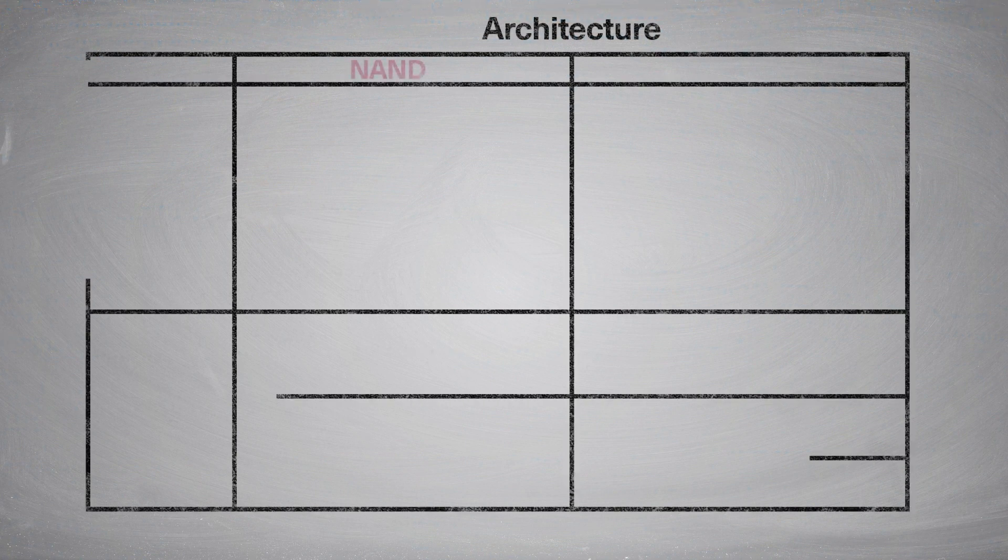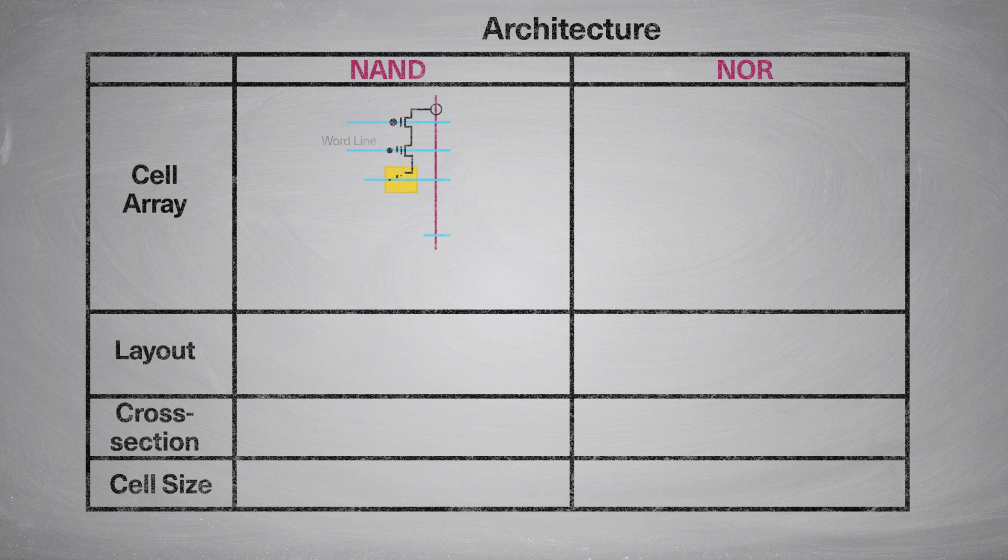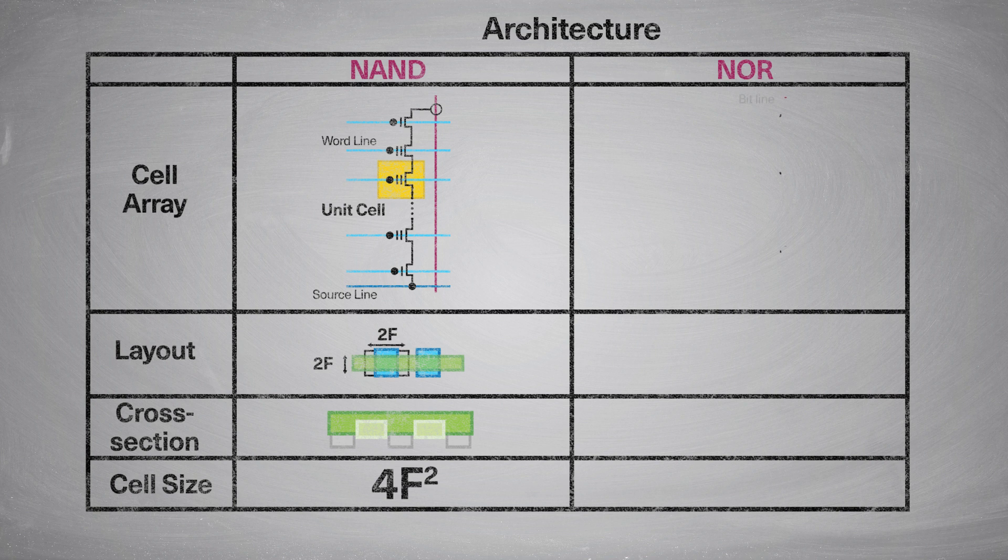First of all, I'd like to explain the difference. NAND Flash and NOR Flash, the main difference is the architecture. As the picture shows, in NAND Flash, the memory cells are arranged in a serial connected architecture. And this architecture is really efficient in terms of memory. You can see that the total cell size is 4F squared in a planar process.